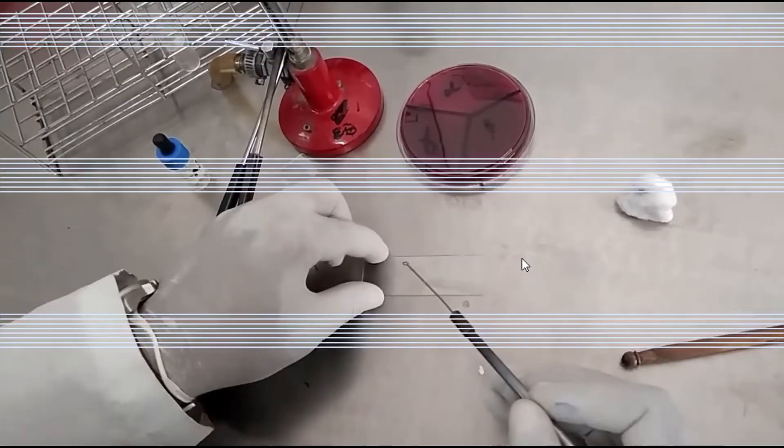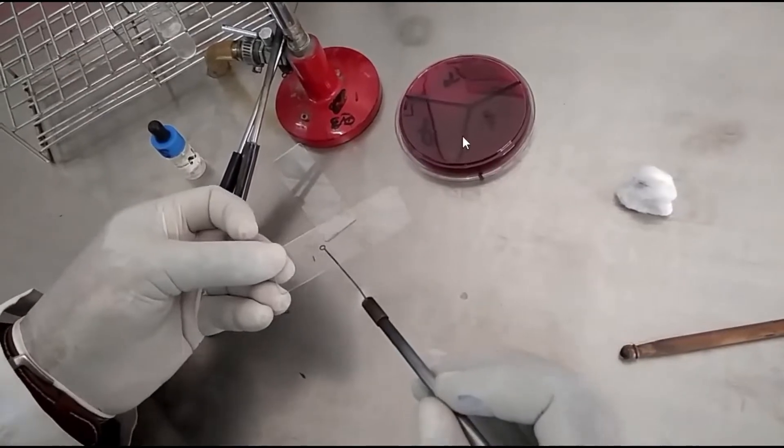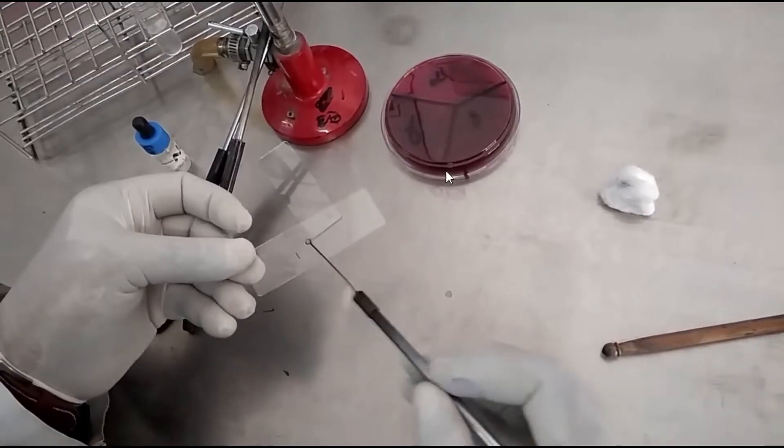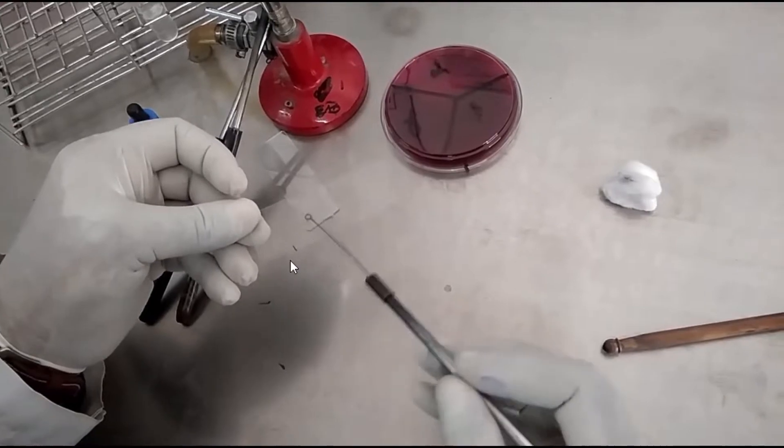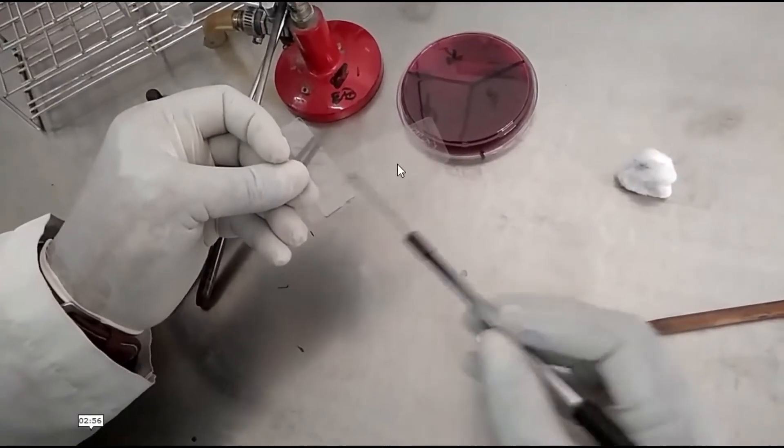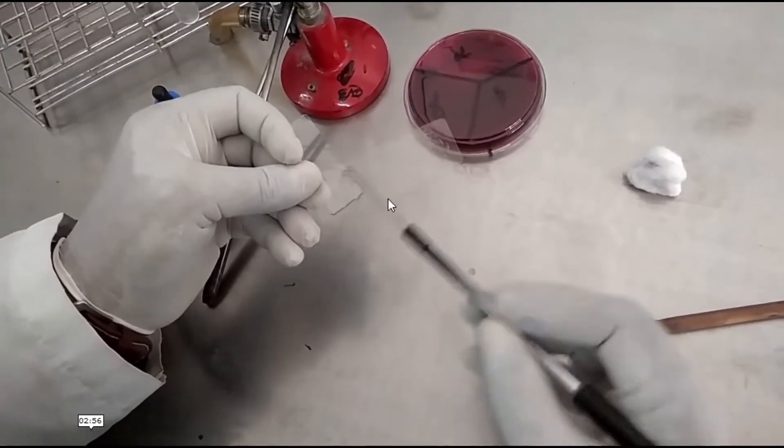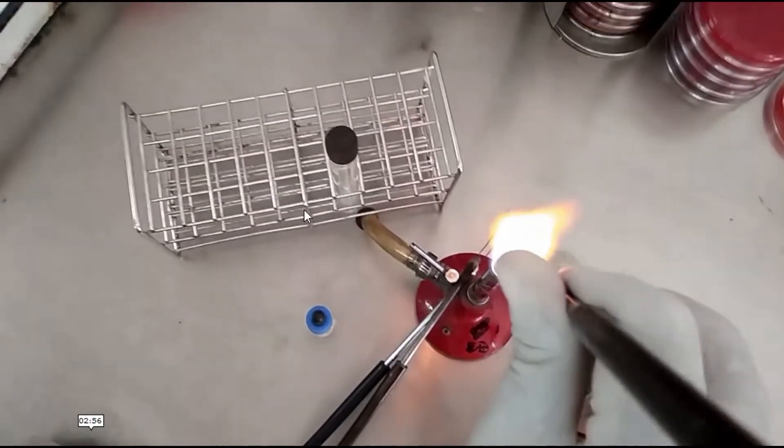Pick up colony from solid medium and make a smear in this way. The size of smear should be 1.5 centimeter. Sterilize the inoculating loop.